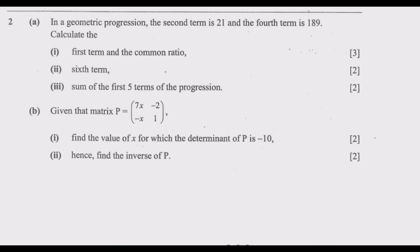Two terms in a geometric progression: the second term is 21 and the fourth term is 189. We need to calculate: number 1 — the first term and the common ratio; number 2 — the sixth term; number 3 — the sum of the first five terms of the progression. Let us start with question A.